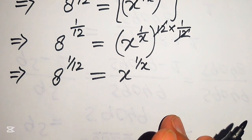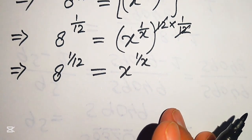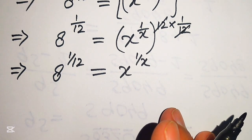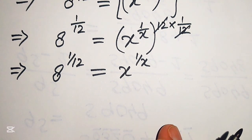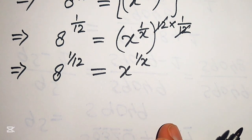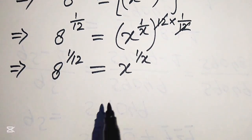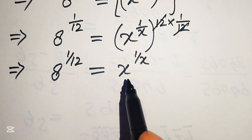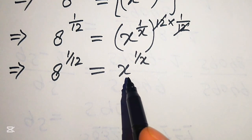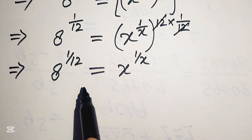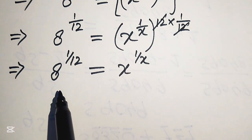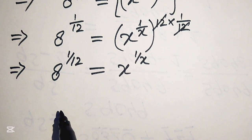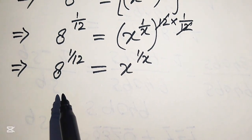Now we have all variable terms on the right-hand side and all constant terms on the left-hand side. We notice that on the right-hand side the exponent is the reciprocal of its base. So now we need to create the same condition on the left-hand side — that is, make the exponent the reciprocal of its base.